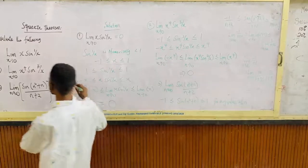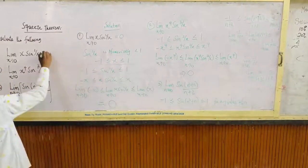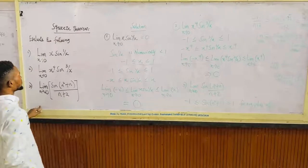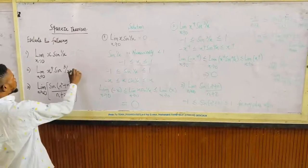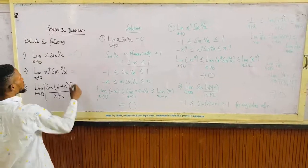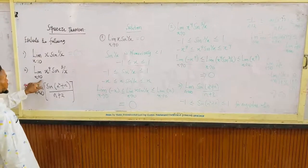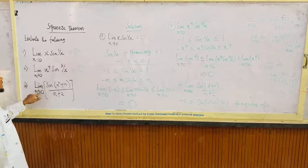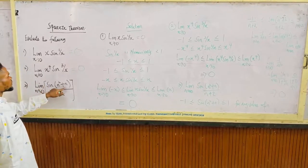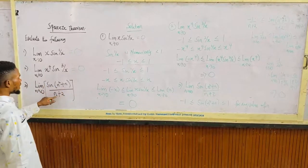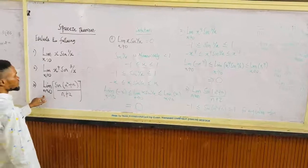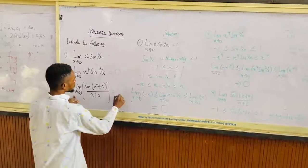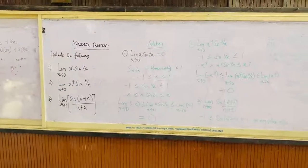And the limit of x sine 1 over x at which x tends to 0 is 0. The limit of x to the power 4 sine 3 over x at which x tends to 0 is 0. And the limit of sine(n² + n) over (n + 2) at which n tends to infinity is 0.